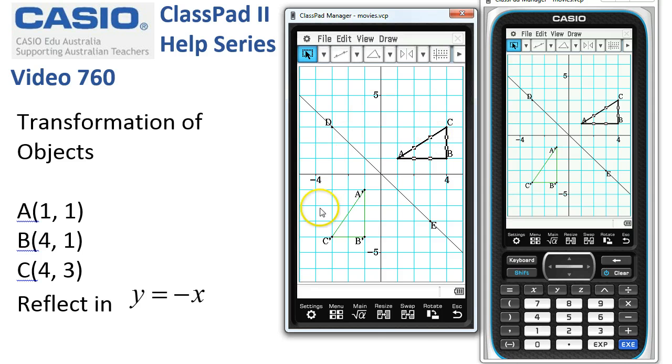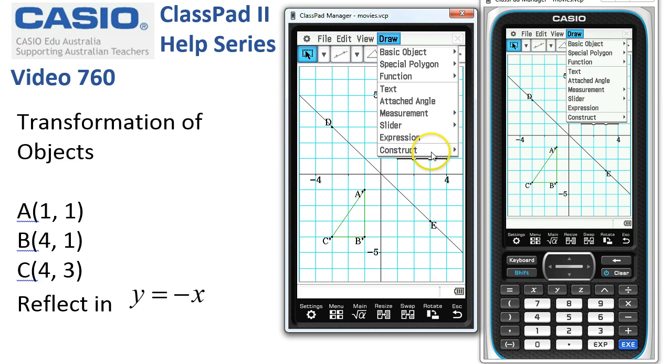the triangle is simply reflected in the mirror line over to here. That's basically how the transformation tools work here under Draw, Construct.